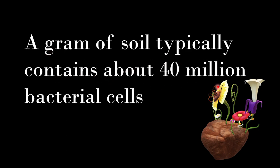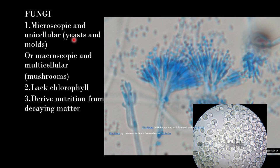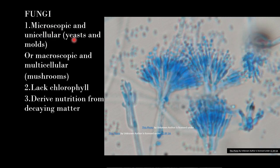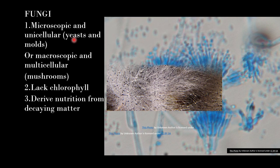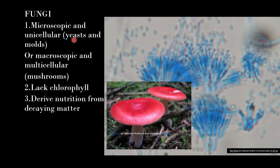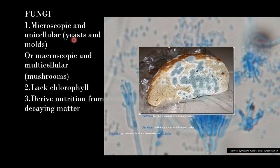The next type of microorganism is fungi. They can be microscopic and unicellular such as yeast and molds, or macroscopic and multicellular such as mushrooms. Fungi lack chlorophyll, so they derive nutrition from dead and decaying matter.